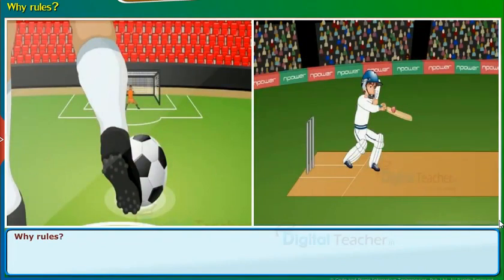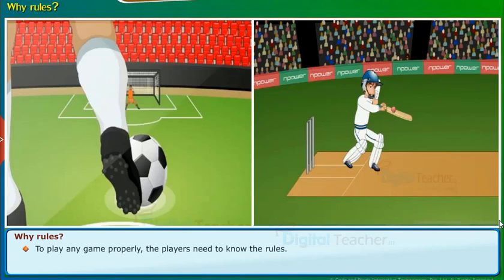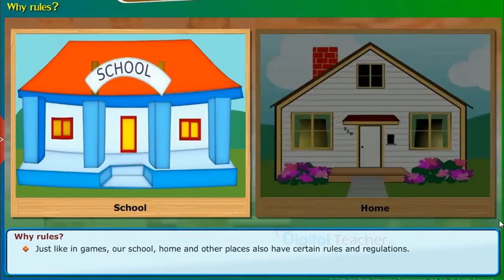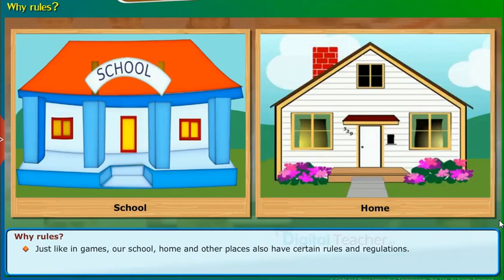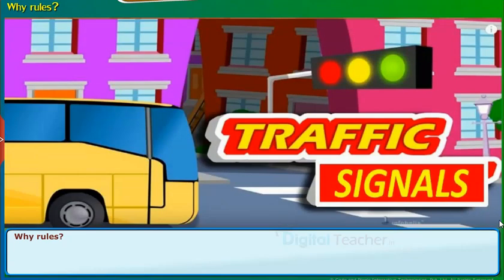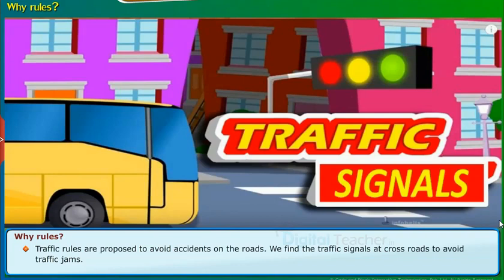Let us now know the importance of rules. Till now, we got to know the rules of the Kabaddi game. But have you ever wondered — to play any game properly, the players need to know the rules. The rules control the game. Just like in games, our school, home, and other places also have certain rules and regulations. Let us go through some examples. Traffic rules are proposed to avoid accidents on the roads. We find the traffic signals at crossroads to avoid traffic jams.